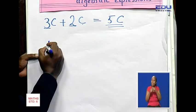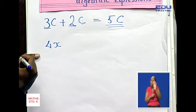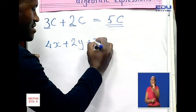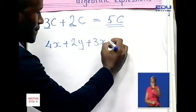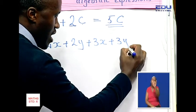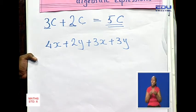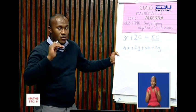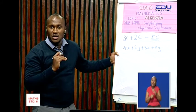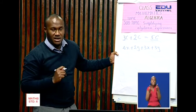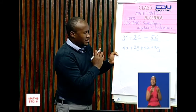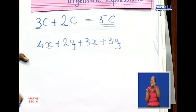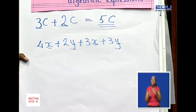The other one is 4X plus 2Y plus 3X plus 3Y. You are given that question. To work out this question as well, remember, we are looking at the rule which says we must put the like terms together. We see here we have an X, a Y, an X, and a Y. We need to put them together.